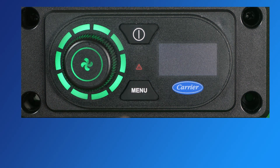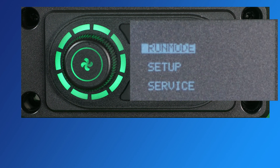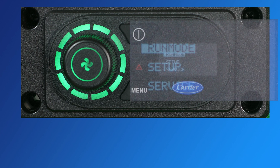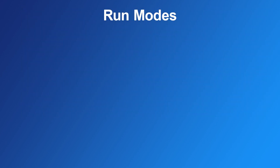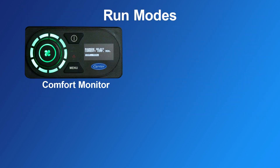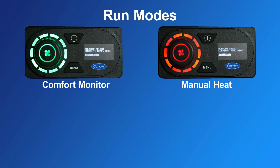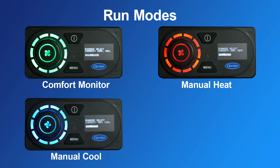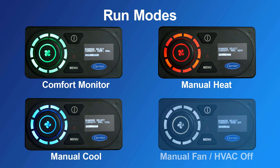Press the menu button on the Aspen interface to go to the main menu, where there will be three choices: run mode, setup, and service. All three choices will be reviewed and detailed, beginning with the run mode menus, followed by the setup and service menus. There are four run modes: comfort monitor automatic mode, manual heat or cool, manual fan, and HVAC off.